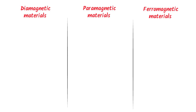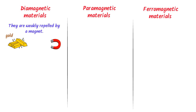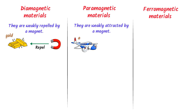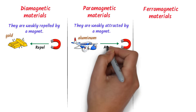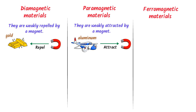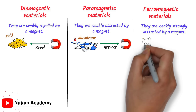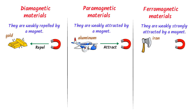Diamagnetic materials are those materials which are weakly repelled by a magnet. For example, when you place gold in a magnetic field, it is weakly repelled by the magnet. While paramagnetic materials are those materials which are weakly attracted by a magnet — for example, aluminum is weakly attracted. While ferromagnetic materials are those materials which are strongly attracted by a magnet — for example, iron placed in a magnetic field is strongly attracted.